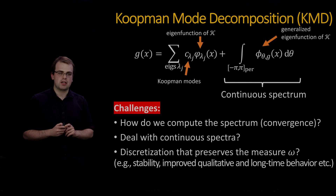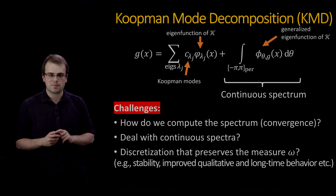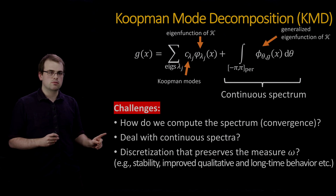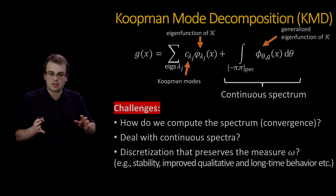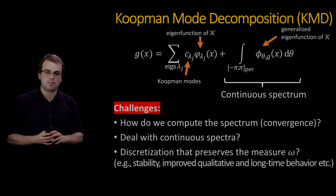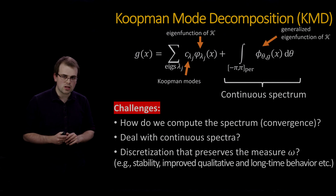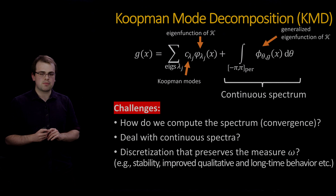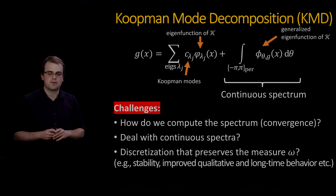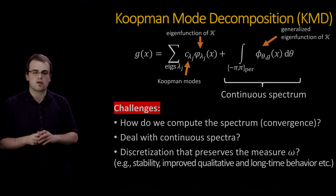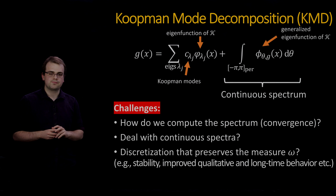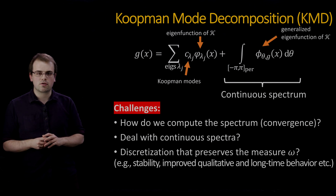There are challenges associated with this goal. First, how do we compute the spectrum — we want a convergent method. Second, how do we deal with continuous spectrum, which appears in chaotic systems but also non-chaotic ones like the nonlinear pendulum. Third, can we achieve these goals with a discretization that preserves the measure omega? This is important for stability, improved qualitative and long-time behavior, and long-time statistics like autocorrelations. I'm going to show a four-line algorithm that tackles these challenges simply for DMD-type methods.